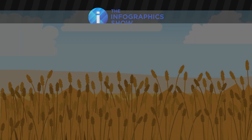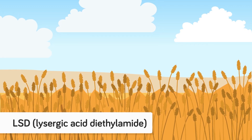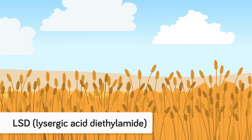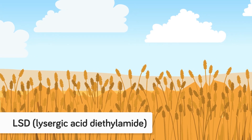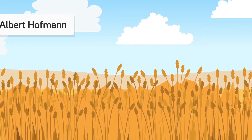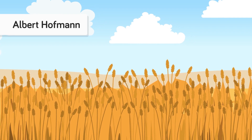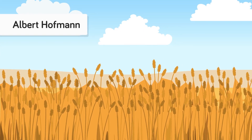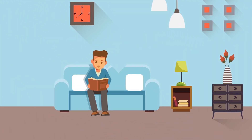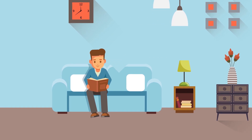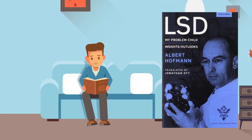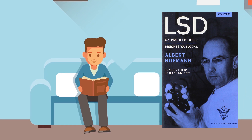LSD stands for lysergic acid diethylamide and is a derivative of the fungus ergot, which grows on rye and other cereal grasses. A Swiss scientist named Albert Hofmann created LSD in 1938 and actually tested it on himself in 1943. He recalled in his book, LSD My Problem Child, the hallucinogenic properties that the drug became famous for.